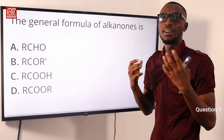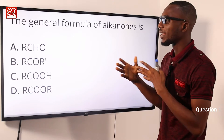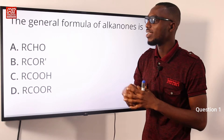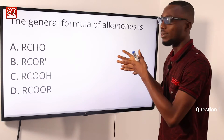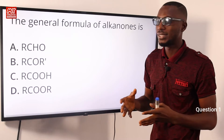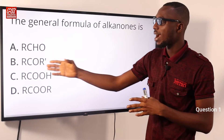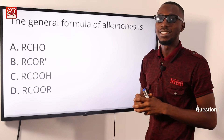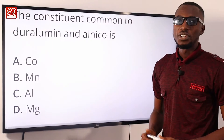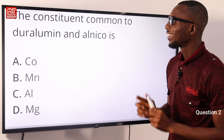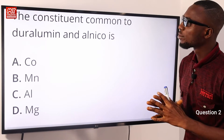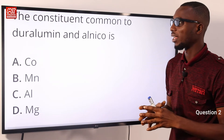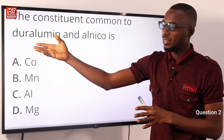Recall that the general formula for alkanals or aldehydes is R-CHO. For alkanones, also known as ketones, their general formula is R-CO-R. So option B is very correct. Question two: the constituent common to duralumin and alnico is what?